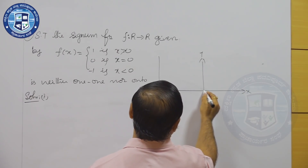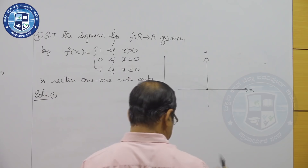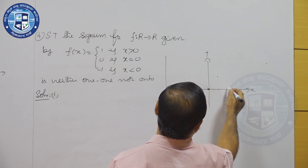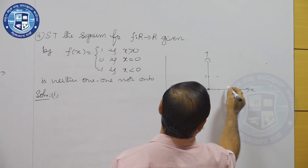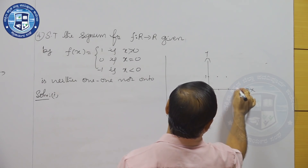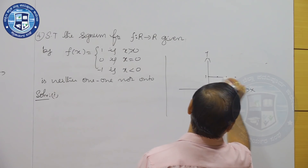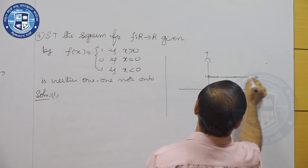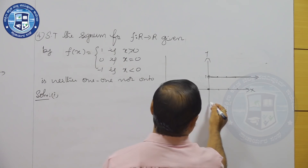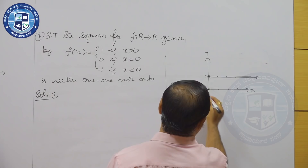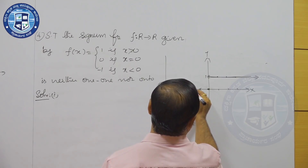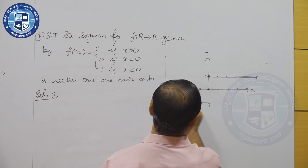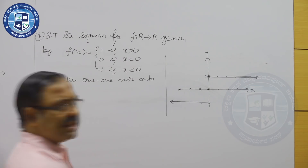For the signum function: 0 maps to 0, 1 maps to 1, 2 maps to 1, 3 maps to 1. Similarly, -1 maps to -1, -2 maps to -1, -3 maps to -1.